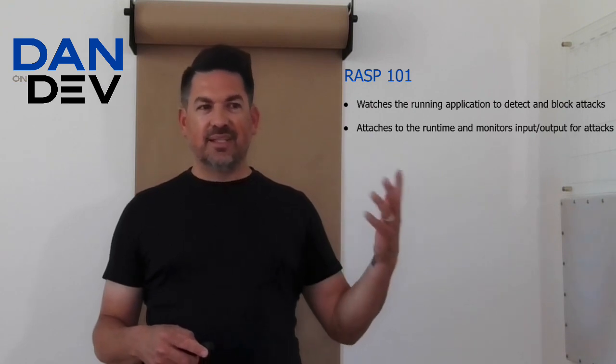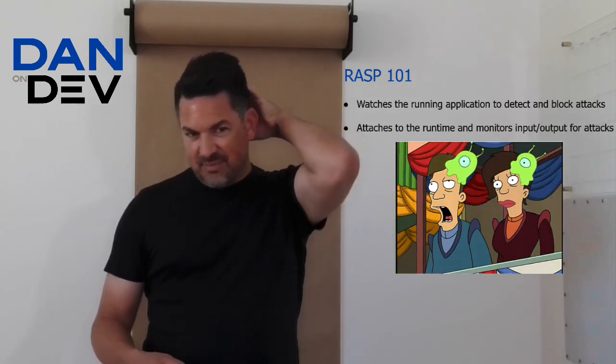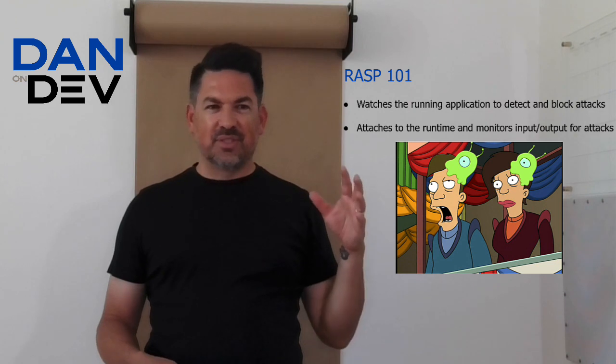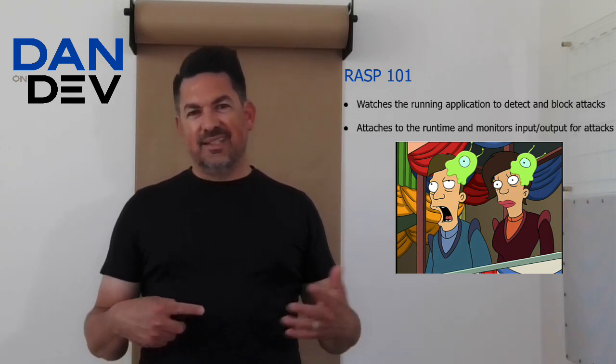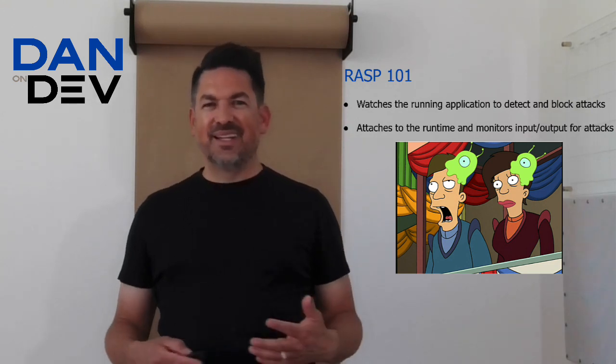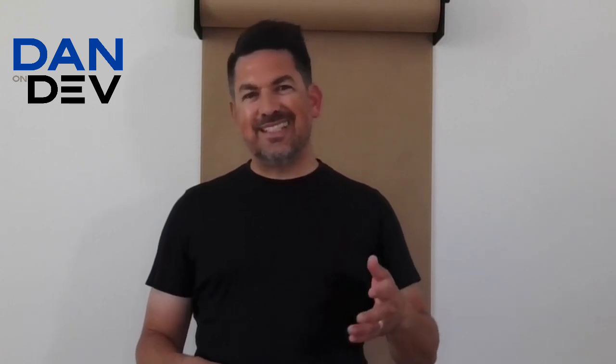I kind of use the analogy of an alien attached to the brain, able to kind of control the person and use them as a robot. They are the ones now in control. That's not entirely true — it's not really in control, but it is controlling some behavior under certain circumstances. So if it sees an attack, it can kind of block it. That sounds fantastic, cool idea, and it is. I actually think RASP is really key.